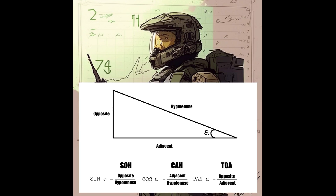SOHCAHTOA is a mathematical tool used to solve problems involving right triangles. SOH stands for sine equals opposite over hypotenuse, CAH is cosine equals adjacent over hypotenuse, and TOA is tangent equals opposite over adjacent.